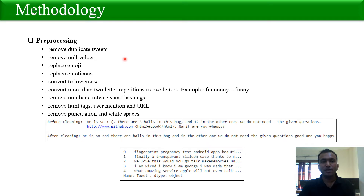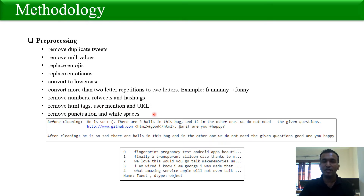Pre-processing: At first we removed duplicate tweets, then removed null values, then replaced emojis using the emoji-translate package of Python. We then created a Python function to perform the following steps: replace emoticons, convert to lowercase, convert more than two repeated letter expressions to two letters, remove numbers, retweets, and hashtags, remove HTML tags, user mentions, and URLs, and remove punctuation and extra spaces. You can see in this figure how the data looks before cleaning and after pre-processing using this function.